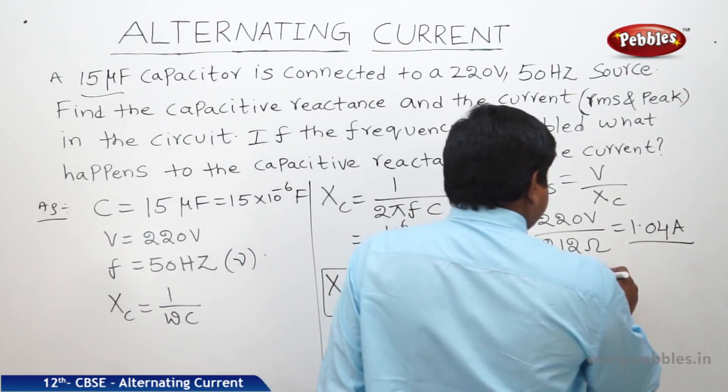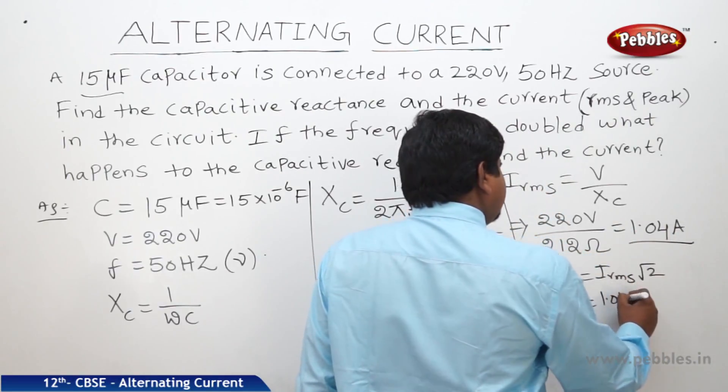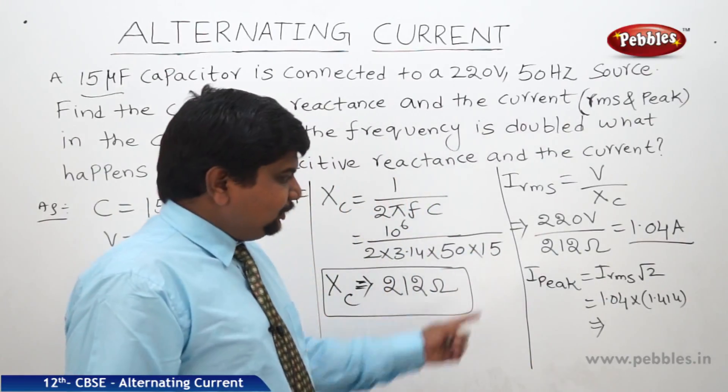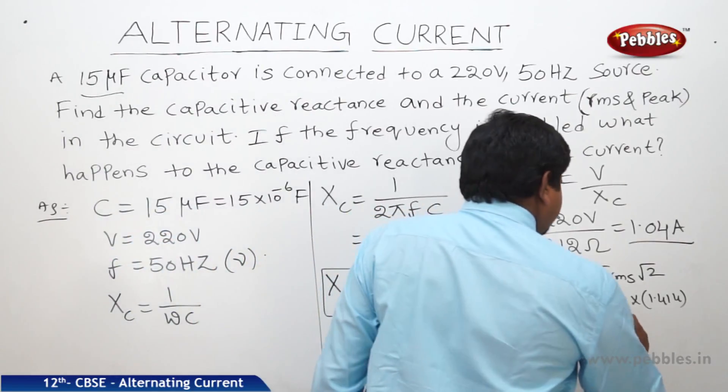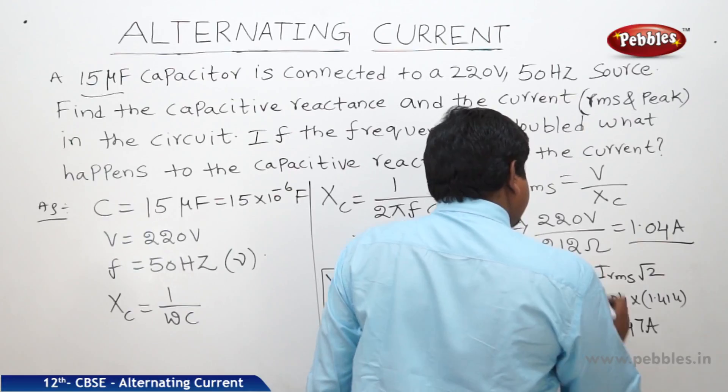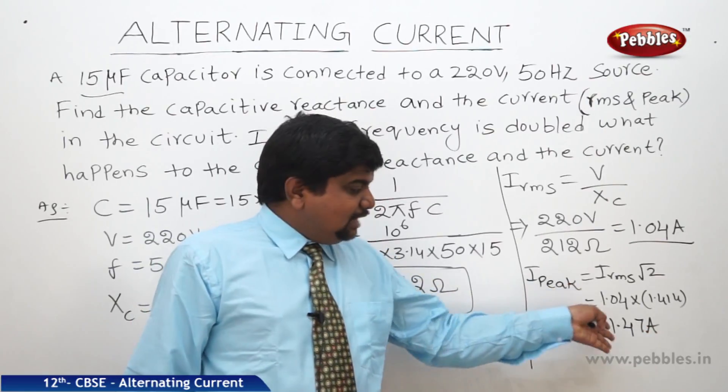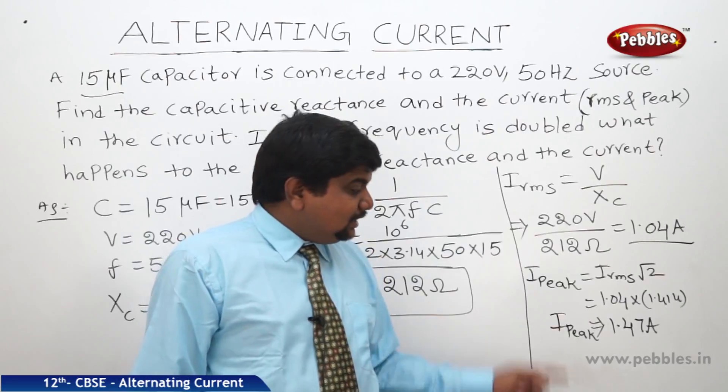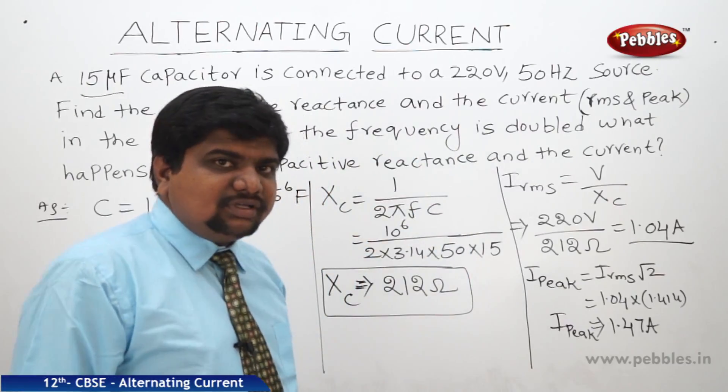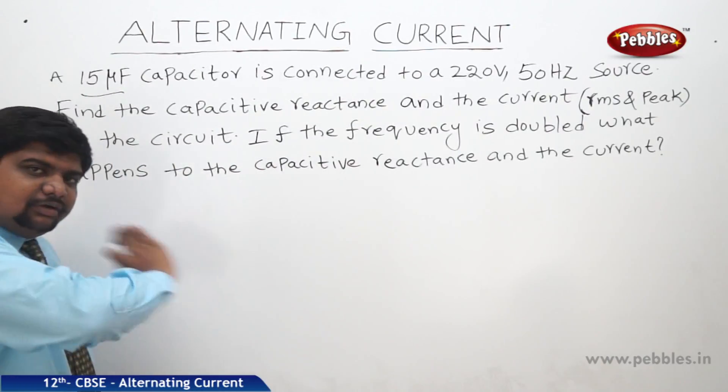What is the peak current? I RMS into root 2. We got IRMS is 1.04, root 2 is 1.414. When you solve this, 1.414 into 1.04, we will get 1.47 ampere. This is I peak. Peak means positive scale to negative scale. The positive scale current value is 1.47, same negative scale value minus 1.47. The peak current oscillates between minus 1.47 to plus 1.47, leading by π/2 with respect to the voltage.